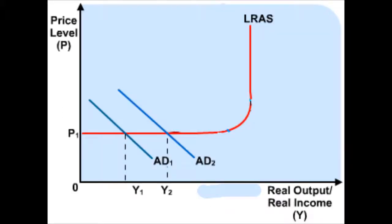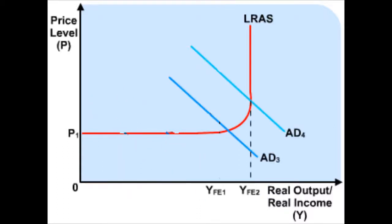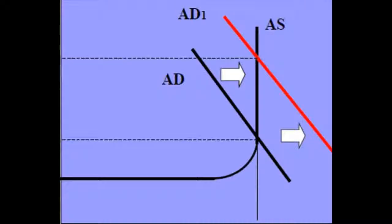When the AD curve shifts rightward in the Keynesian range, also known as the recessionary gap, there is an increase in real output but prices do not change. In the intermediate range, they both increase. And in the classical range, also known as the inflationary gap, when AD is shifted rightward, price levels increase but real output does not.